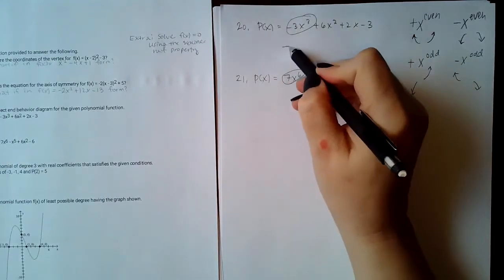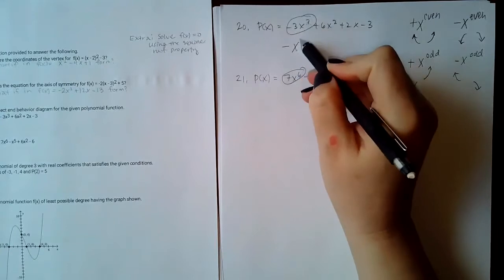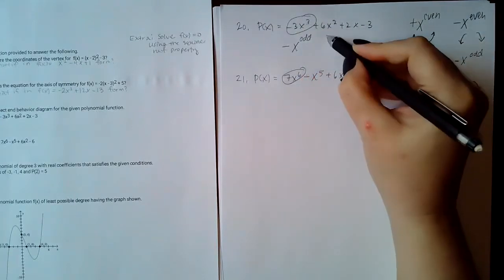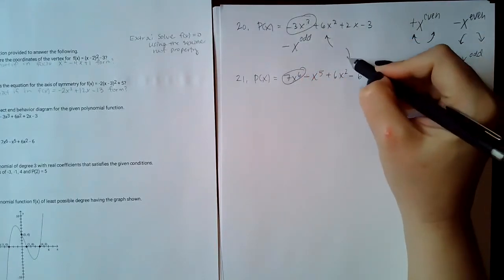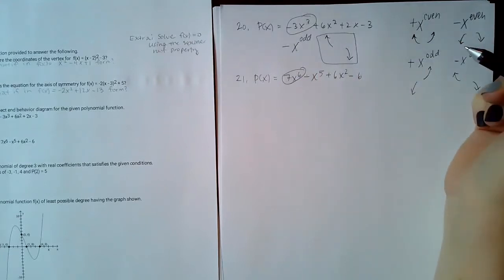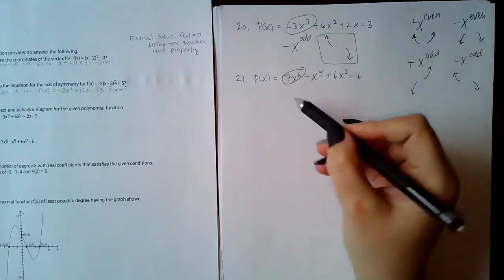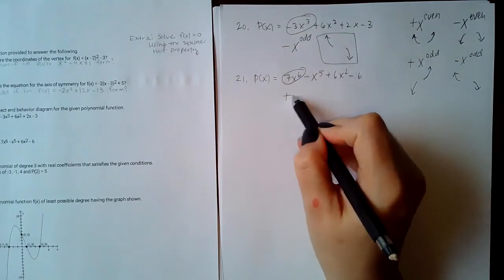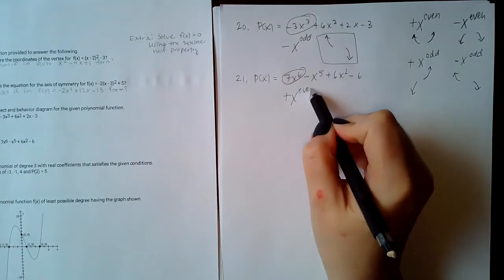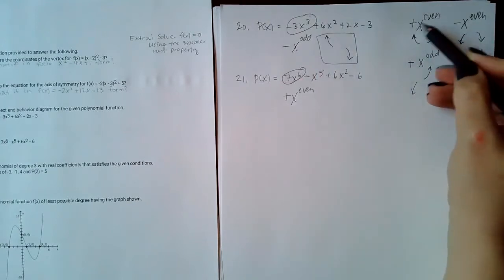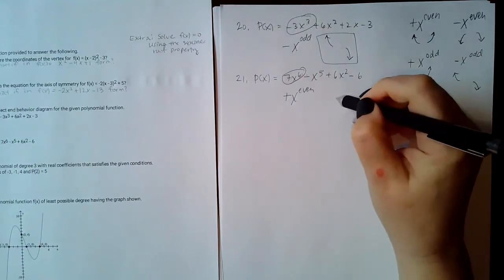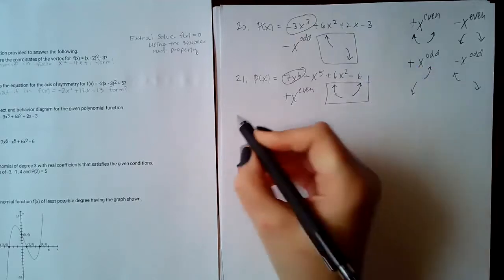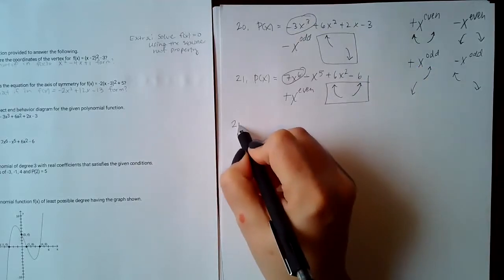For number 20, the leading term has a negative coefficient and an odd exponent, which means it goes up on the left and down on the right. For number 21, the leading term has a positive coefficient and an even exponent, so it goes up on both ends. That is the correct end behavior for both problems.